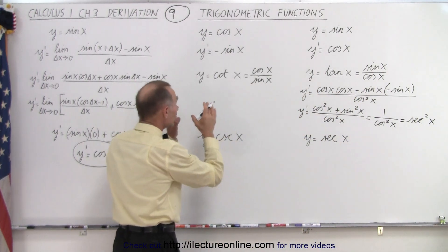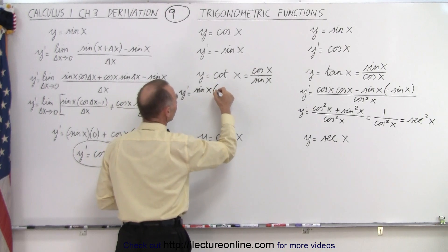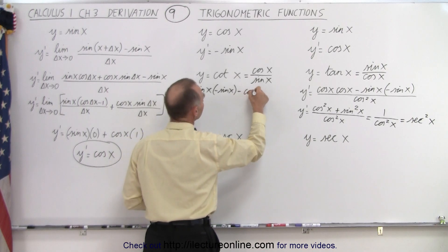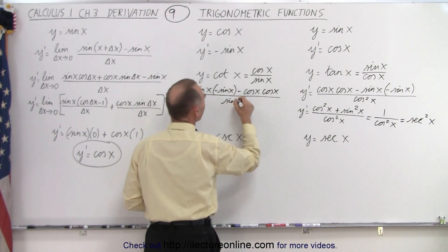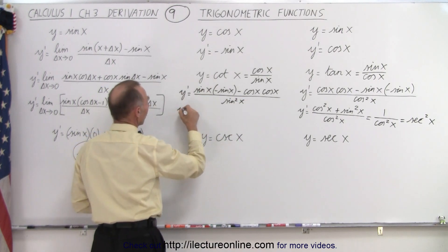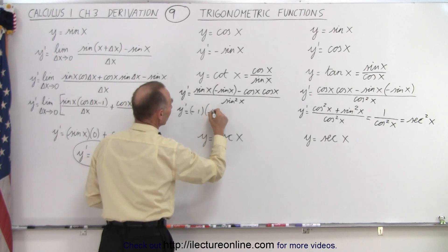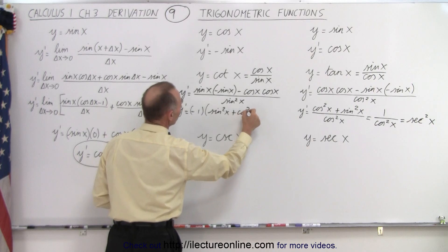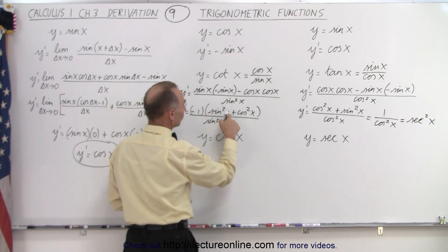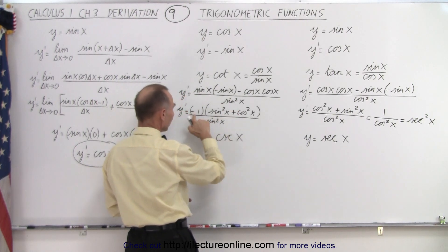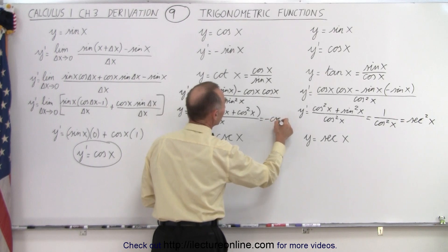Then we do exactly the same with cotangent. We use the same principle: y-prime equals the denominator times the derivative of the numerator, which is negative sine of x, minus the numerator times the derivative of the denominator, all divided by the denominator squared. We can factor out negative one, giving us negative one times sine squared of x plus cosine squared of x, divided by sine squared of x. Since sine squared plus cosine squared equals one, this becomes negative one over sine squared of x, which equals negative cosecant squared of x.